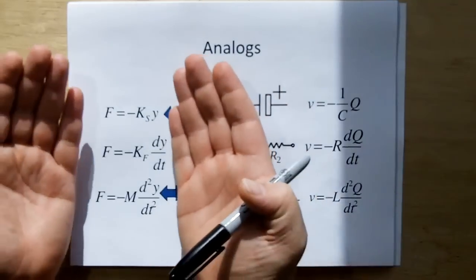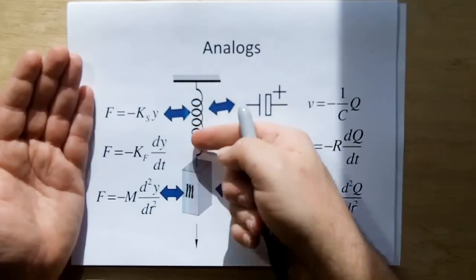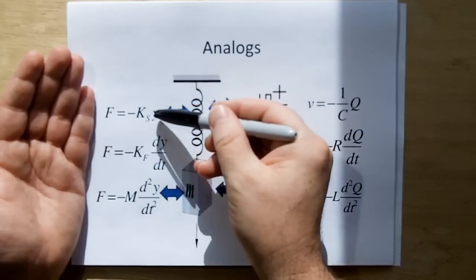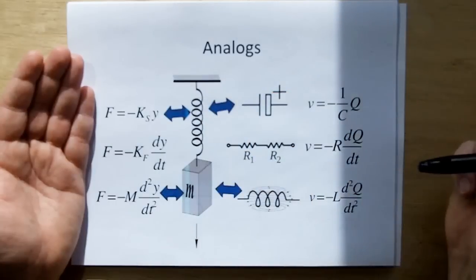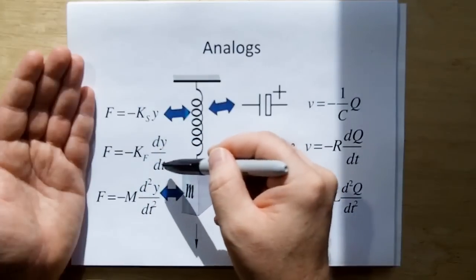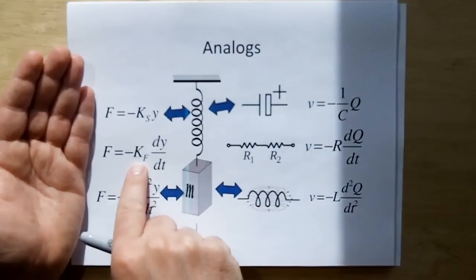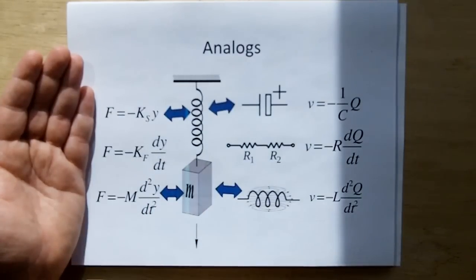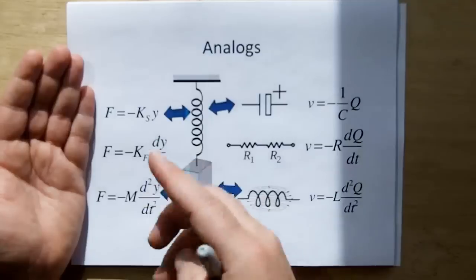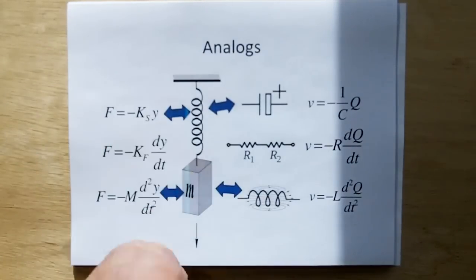And the electrical analog for inertia of the mass is an inductor. And so you have these physical models here. This is the y as the position of the mass as it moves up and down. The position of the mass times the spring constant gives you the spring force. The first order derivative of y multiplied by the coefficient of friction gives you the frictional force. And the second order derivative multiplied by the mass, which is the inertia, gives you the inertial force of this system.